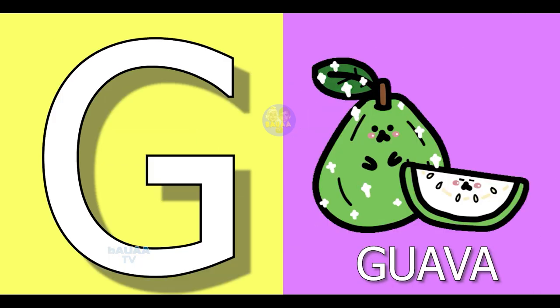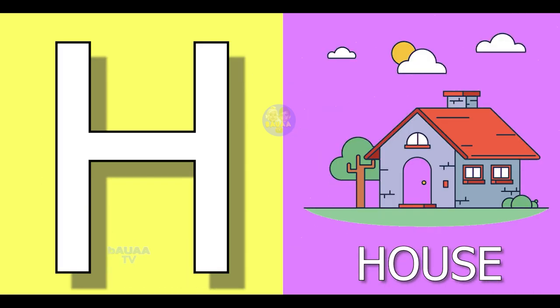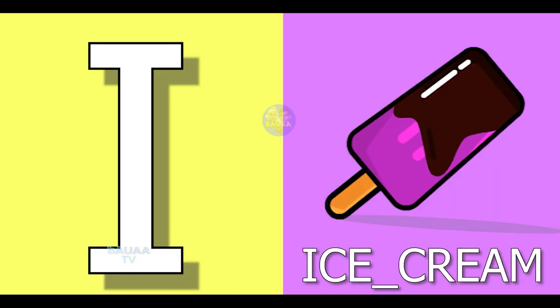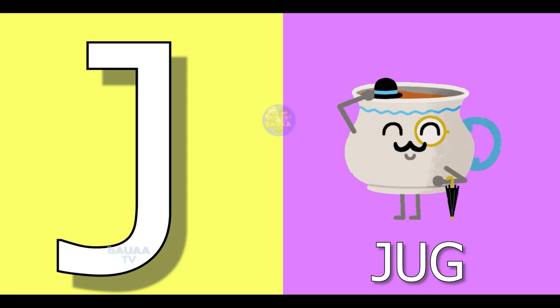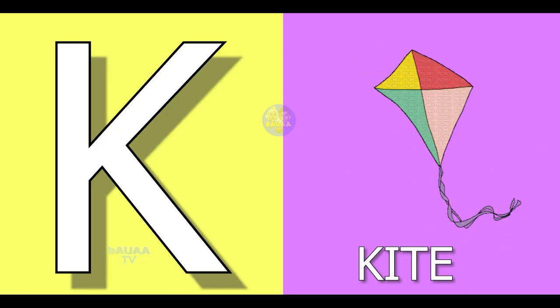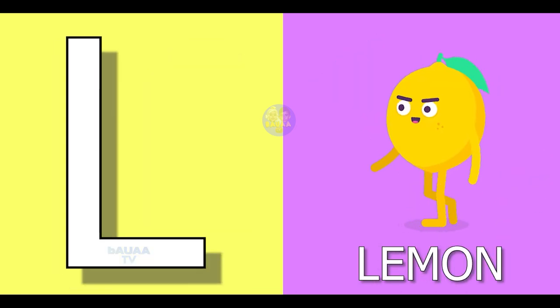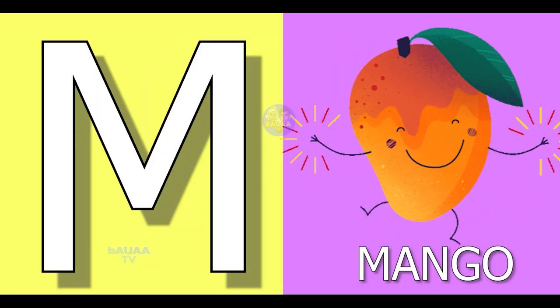G for guava, H for house, I for ice cream, J for jug, K for kite, L for lemon.